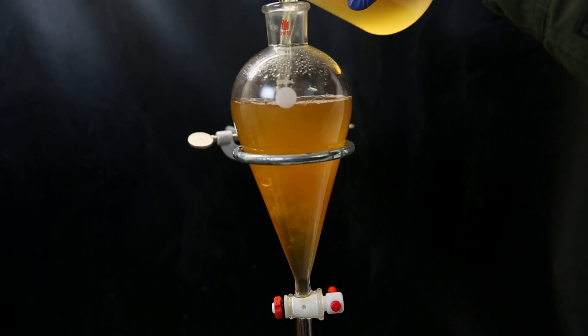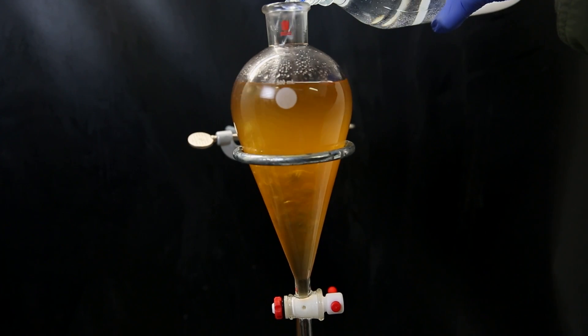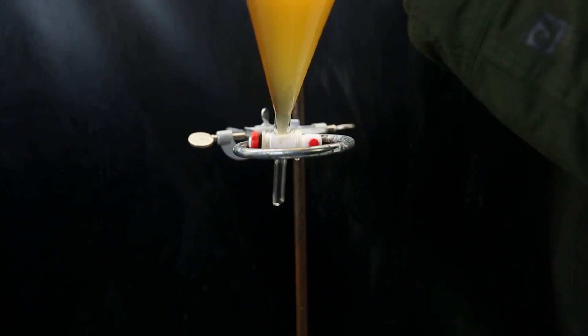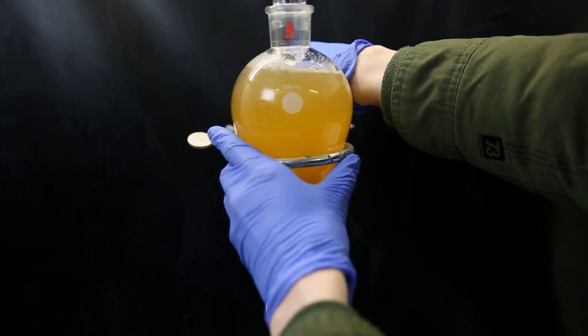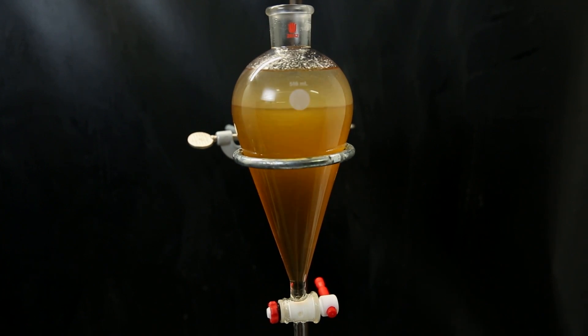We see that the DCM layer is cloudy, which often means that there is water present in the DCM. So to remove most of it, I wash it with brine, which is a saturated solution of sodium chloride, which can pull water out of the DCM. We see the DCM layer becomes clear, and I separate the layers again.